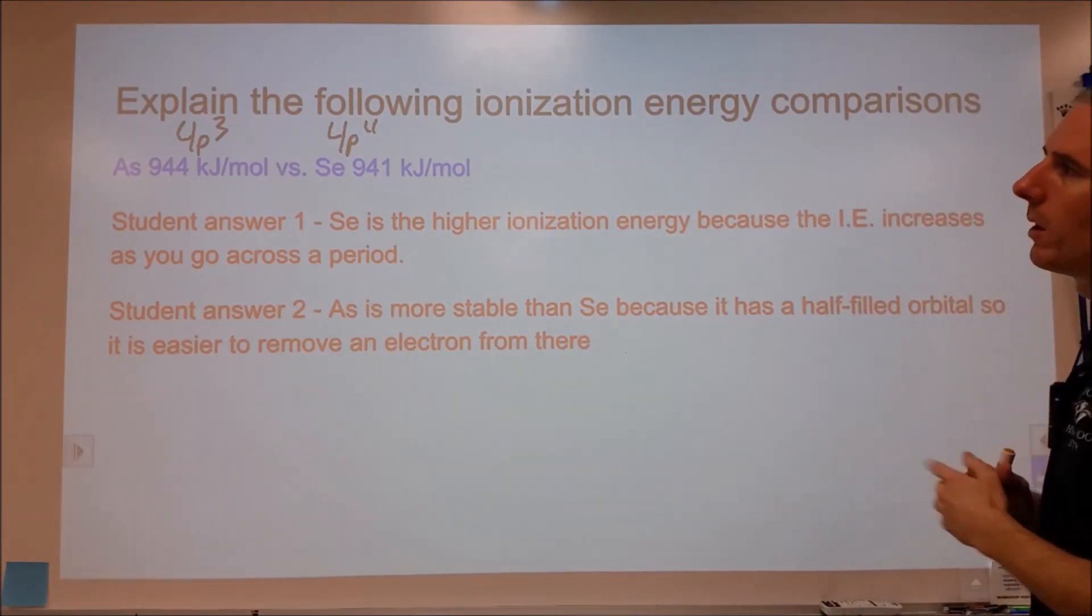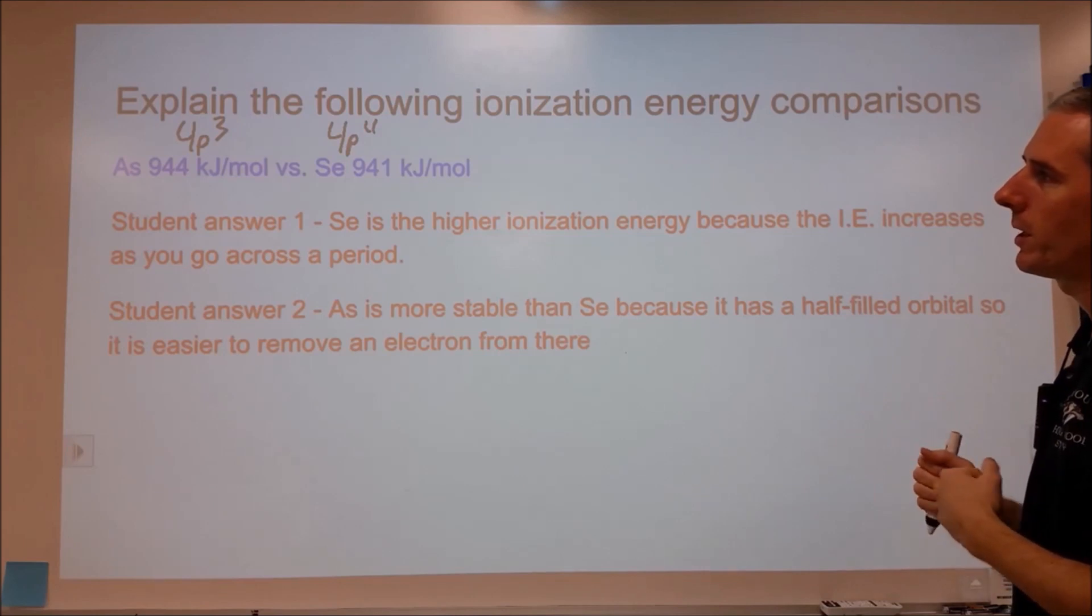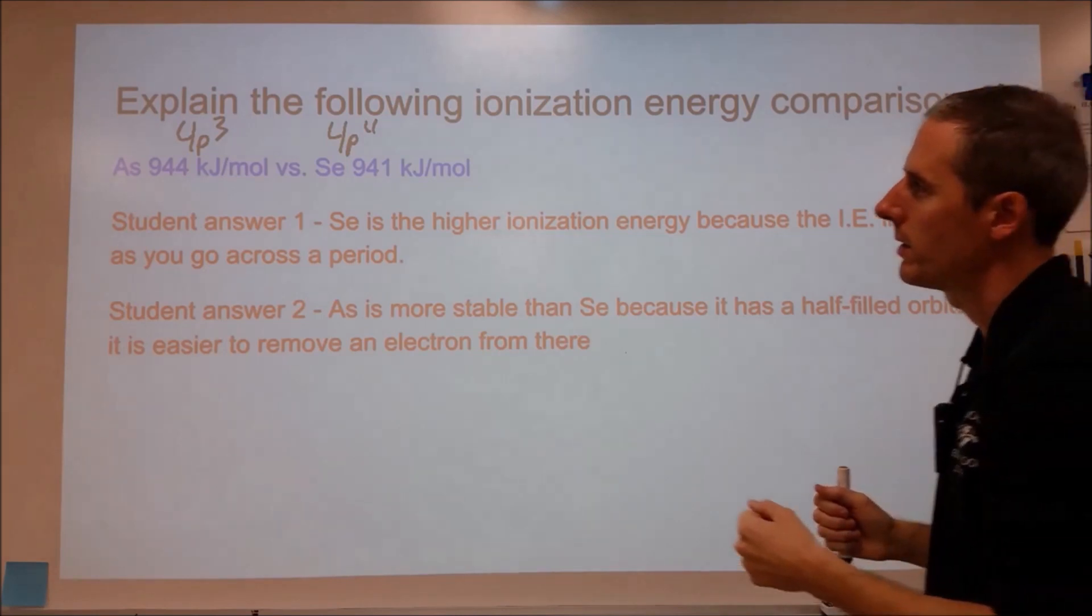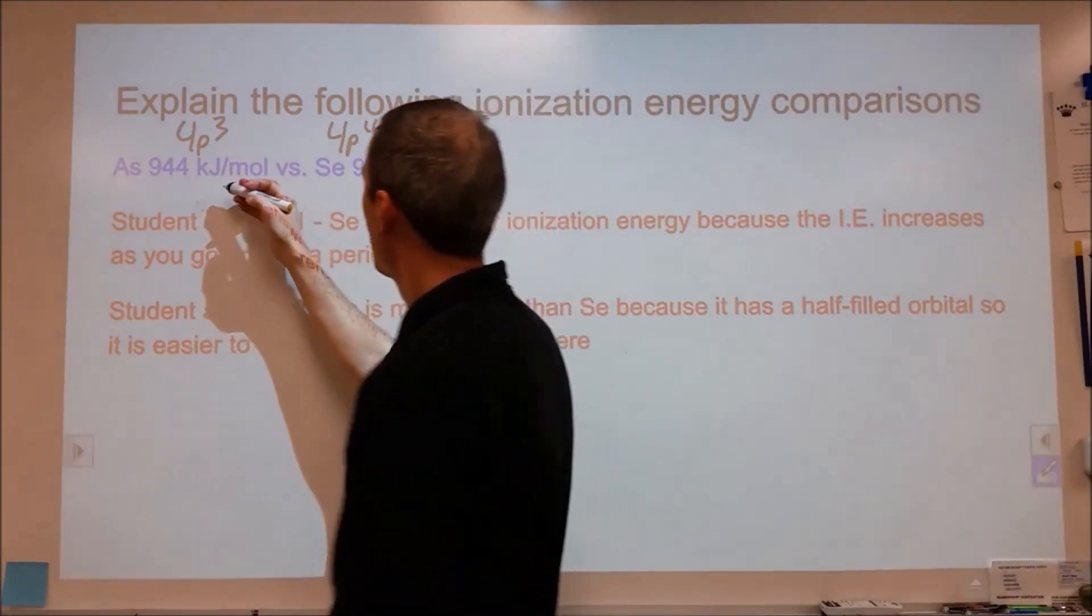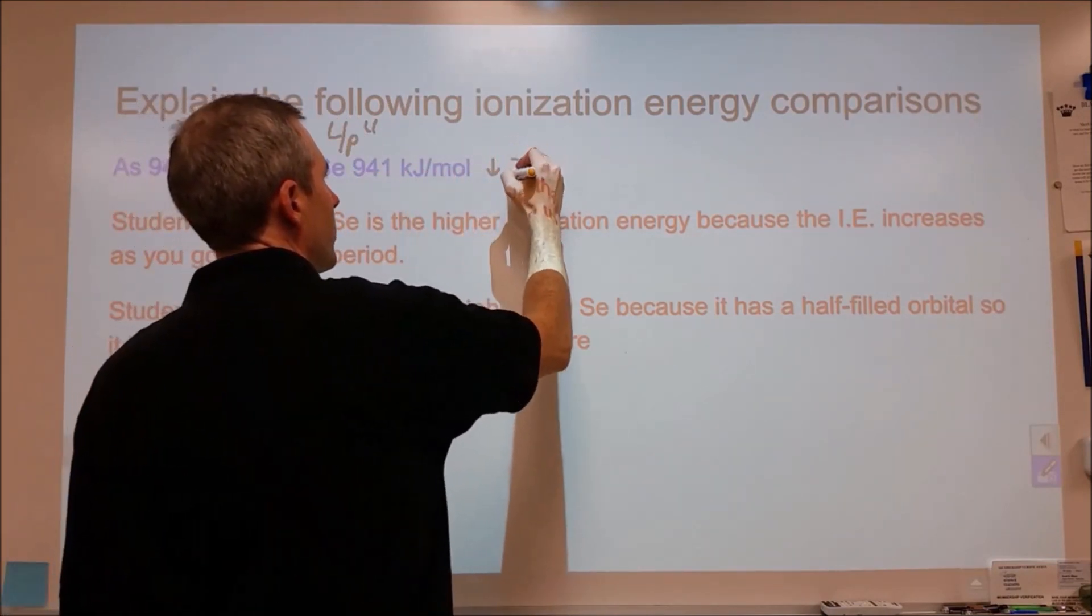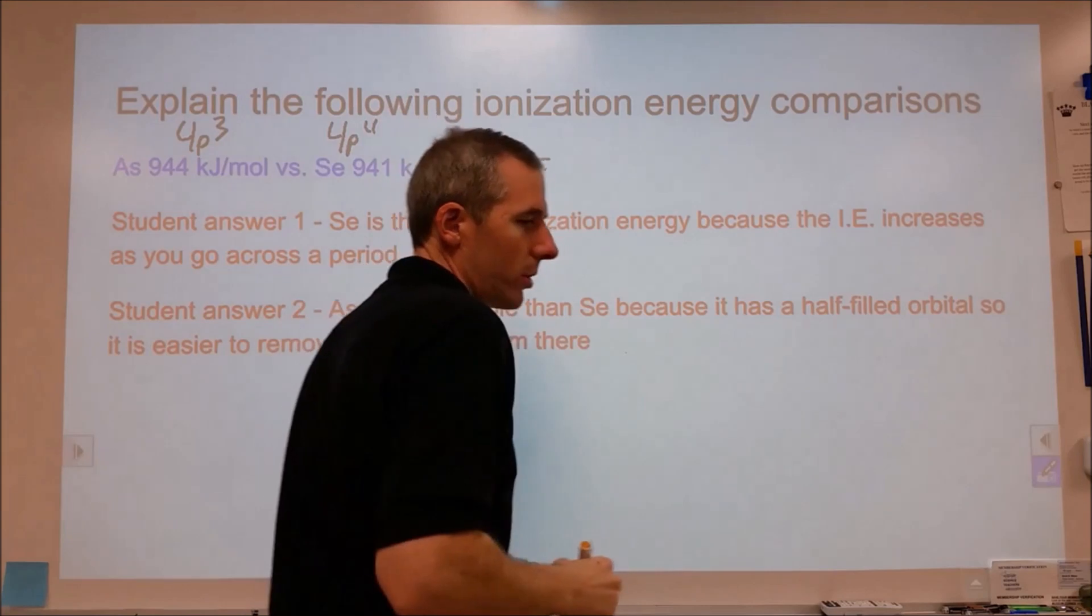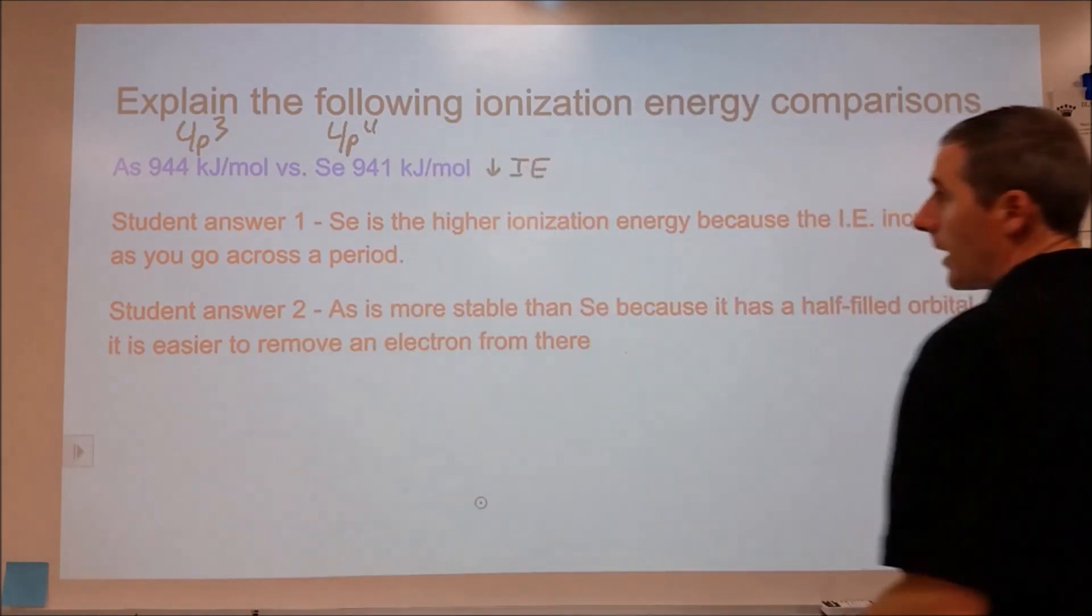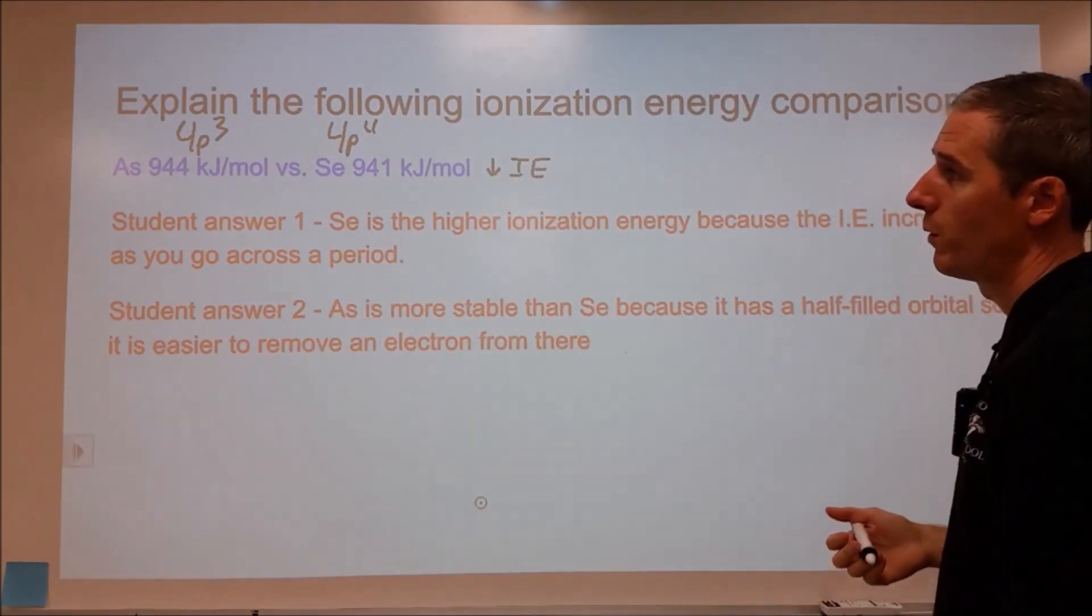So our final electrons are in the 4p states for these, and it seems as though as we move from arsenic to selenium, we see a very tiny decrease in ionization energy, which is interesting because normally the ionization energy increases as we move from left to right.